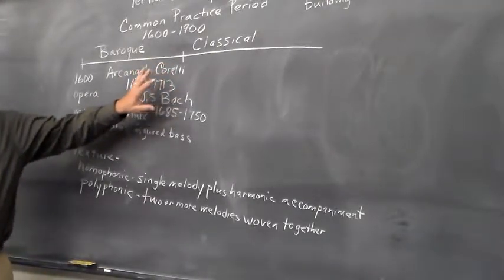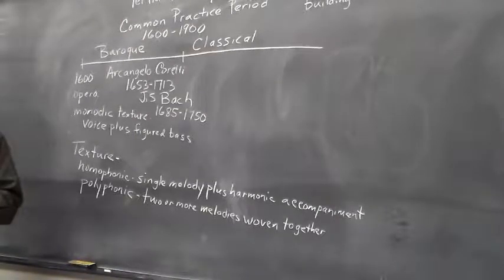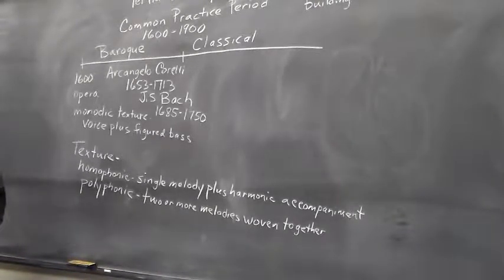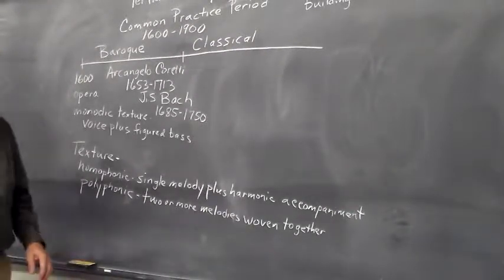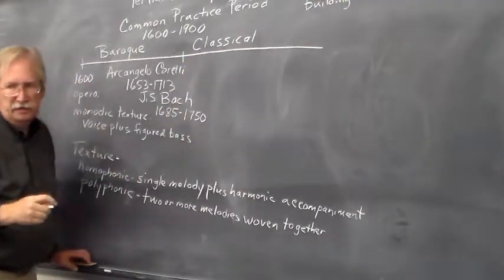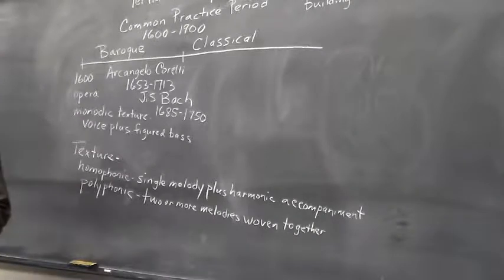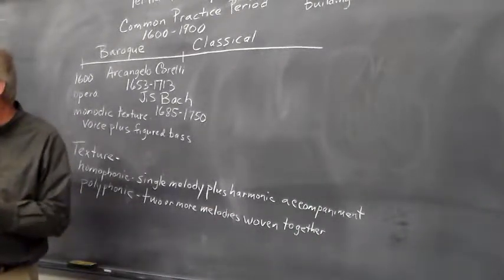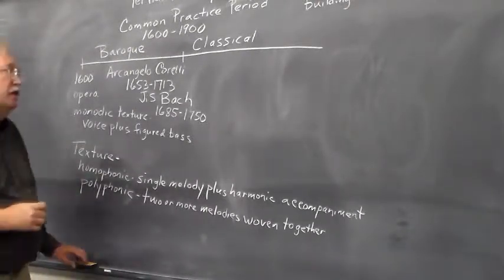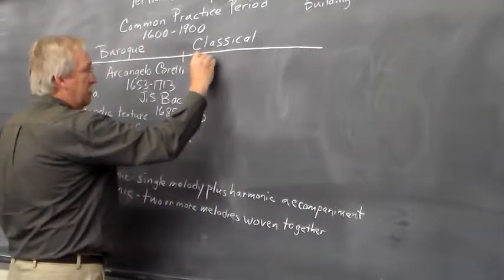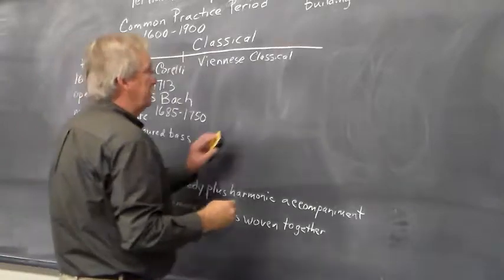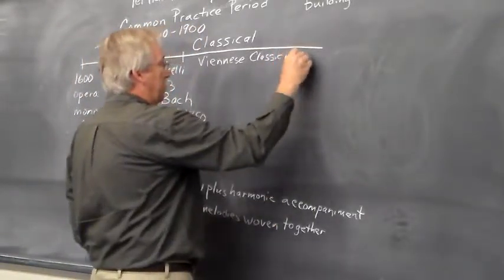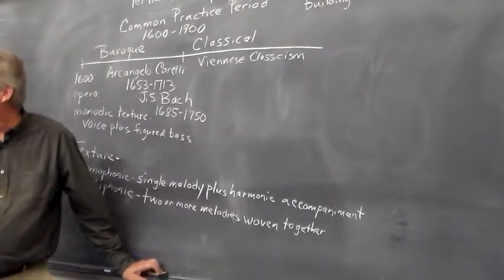A similar thing happened at the beginning of the Classical period in that the style changed and was associated with being easily accessible to the listener — not something complicated, but something that would delight and please the listener. The Classical era was really centered around one city in Europe: Vienna. There are four Viennese Classical composers at the very top of this era — a term called Viennese Classicism — and those composers are Haydn, Mozart, Beethoven, and Schubert.